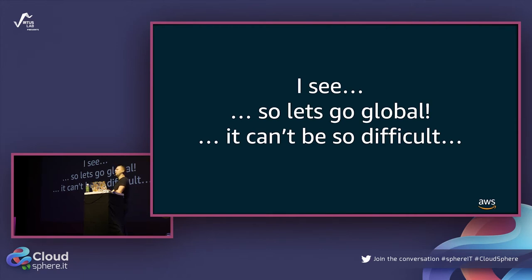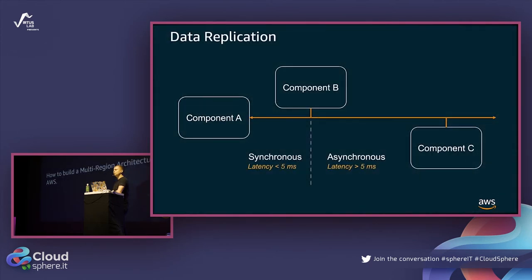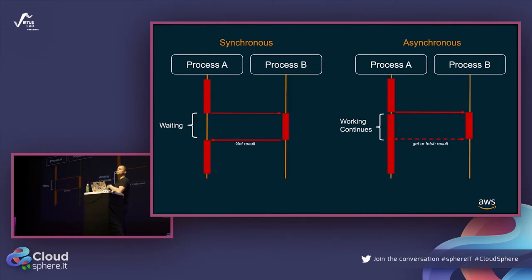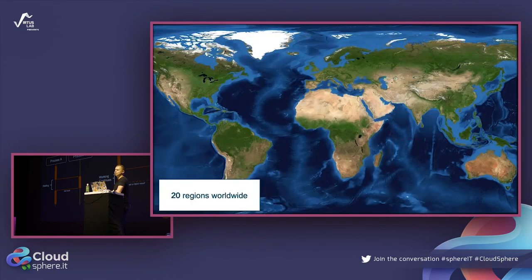Global systems have benefits, but they are not easy to build. The first challenge is physics. When you copy data from one location to another and the latency is less than 5 milliseconds, it's okay. But for most systems, waiting more than 5 milliseconds is not acceptable, so you need to consider asynchronous replication, synchronous calls, or asynchronous calls.